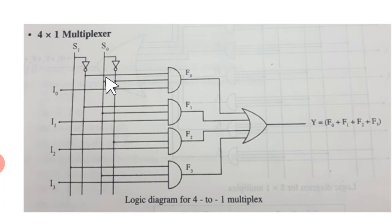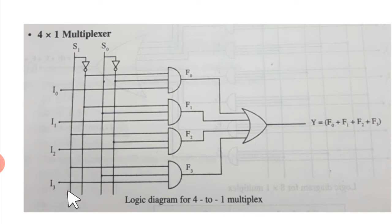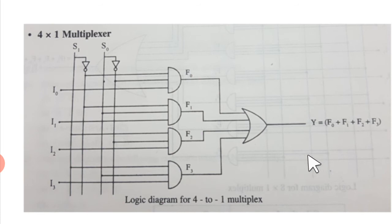Similarly, for combination S1 and S0', it selects I2. And for S1 and S0 with no complementation, it selects I3. The output of these AND gates — F0, F1, F2, and F3 — are all sent through an OR gate, producing the final output Y. So F0, F1, F2, and F3 combine at the OR gate to give output Y. I hope you have a clear idea and can draw this circuit.